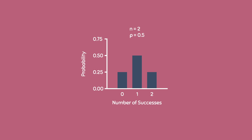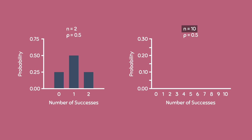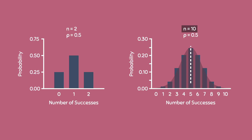Now let's see what happens if we increase the number of trials n. If n is equal to 10, which means we are flipping the coin 10 times instead of 2, we can see that the shape of the binomial distribution begins to look like a normal distribution. In this case, we see that the mean of the binomial distribution is centered around 5.